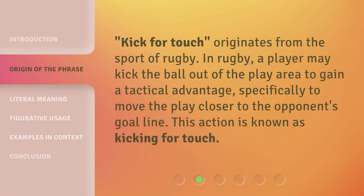Kick for Touch originates from the sport of rugby. In rugby, a player may kick the ball out of the play area to gain a tactical advantage, specifically to move the play closer to the opponent's goal line. This action is known as kicking for touch.